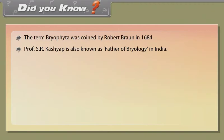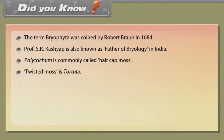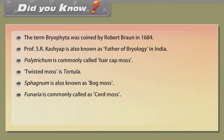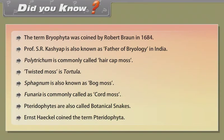Did you know? The term Bryophyta was coined by Robert Braun in 1684. Professor S.R. Kashyap is also known as Father of Bryology in India. Polytrichum is commonly called Hair Cap Moss. Twisted Moss is Tortula. Sphagnum is also known as Bog Moss. Funaria is commonly called as Cord Moss. Pteridophytes are also called botanical snakes. Ernst Haeckel coined the term Pteridophyta.